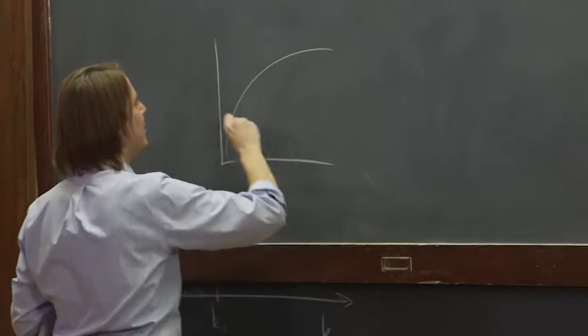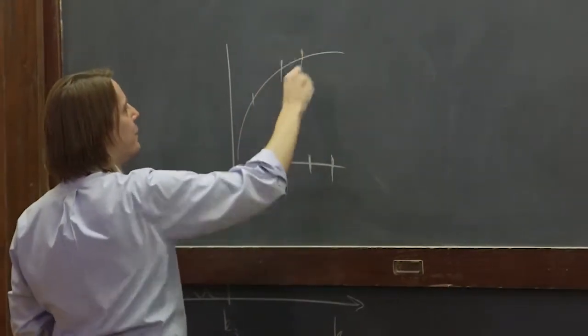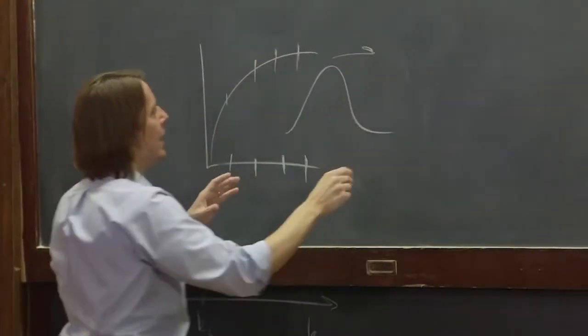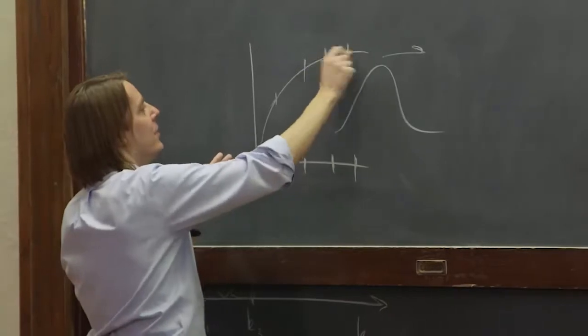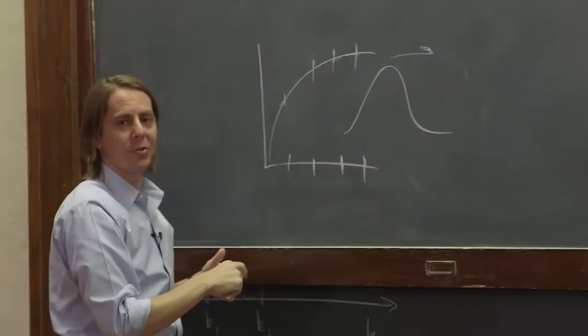So if you're, here's your dispersive medium, and you use this frequency, this frequency, this frequency, and this frequency to define some pulse, and they all are at different, they have different slopes. You can't define a single group velocity for this pulse because they're all at different points on the curve, and the slope is different.